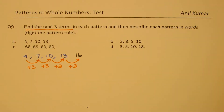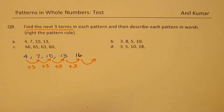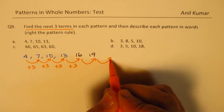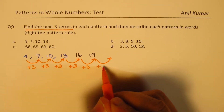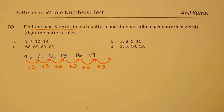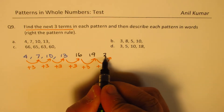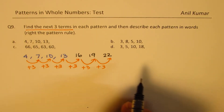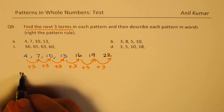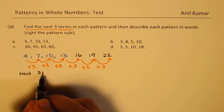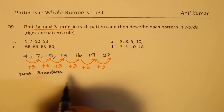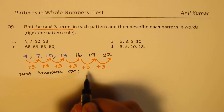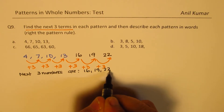And then again if I add 3, I get 16 plus 3 which is 19. And this process should be repeated, so we again add 3. Adding 3 each time to get the next number, we get 22. So the next three numbers are, as shown, 16, 19, and 22.